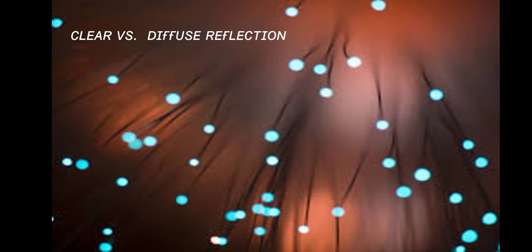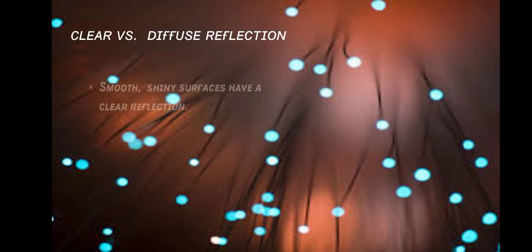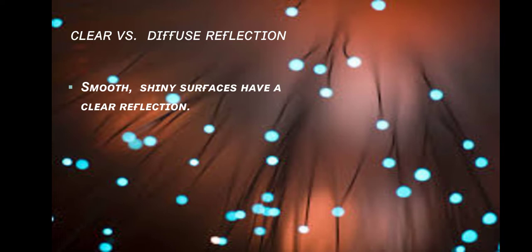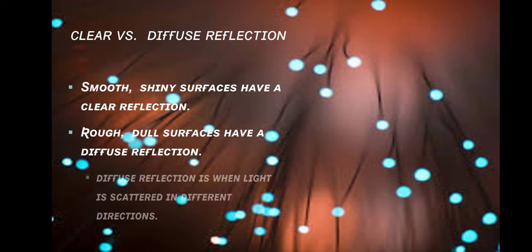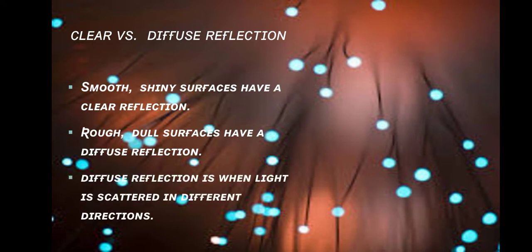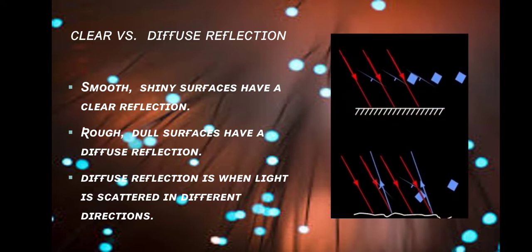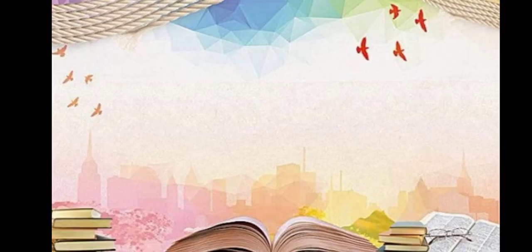Now let us talk about clear versus diffuse reflection. Smooth, shiny surfaces have a clear reflection. Rough, dull surfaces have a diffuse reflection. Diffuse reflection is when light is scattered in different directions. We can see in the diagram that the first diagram shows clear reflection and the second shows diffuse reflection.